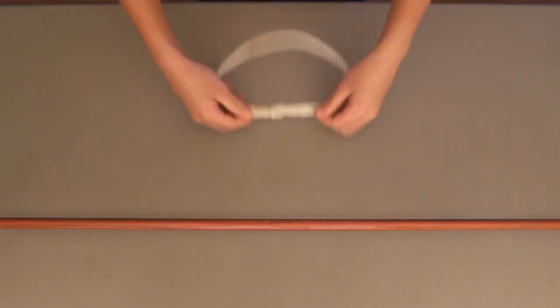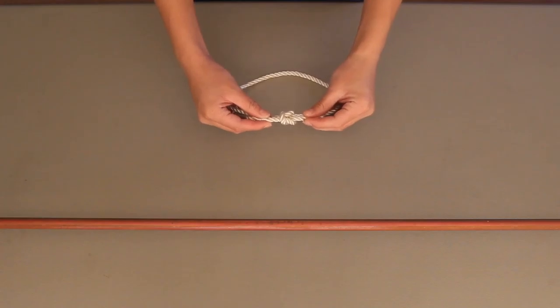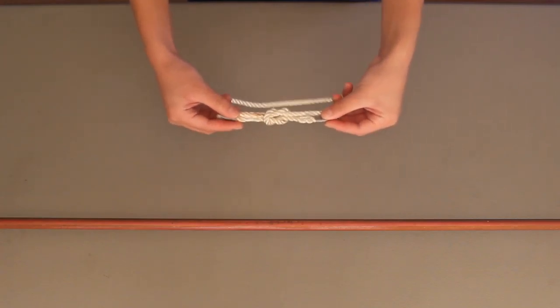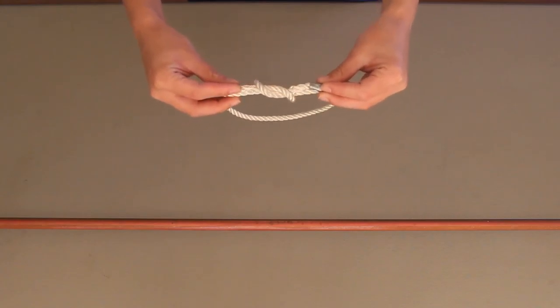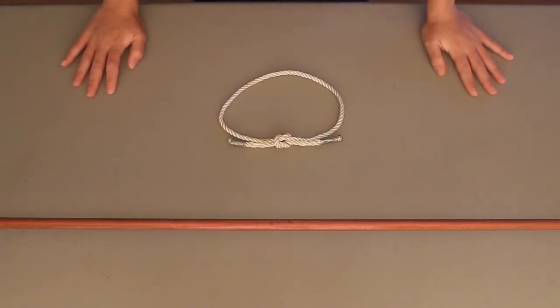And there you go, that's a square knot. Now the way you can tell that it's a square knot is if you were to push on the two ends, you'll get this kind of an interlacing setup with the rope. And that's how you tell you have a square knot.